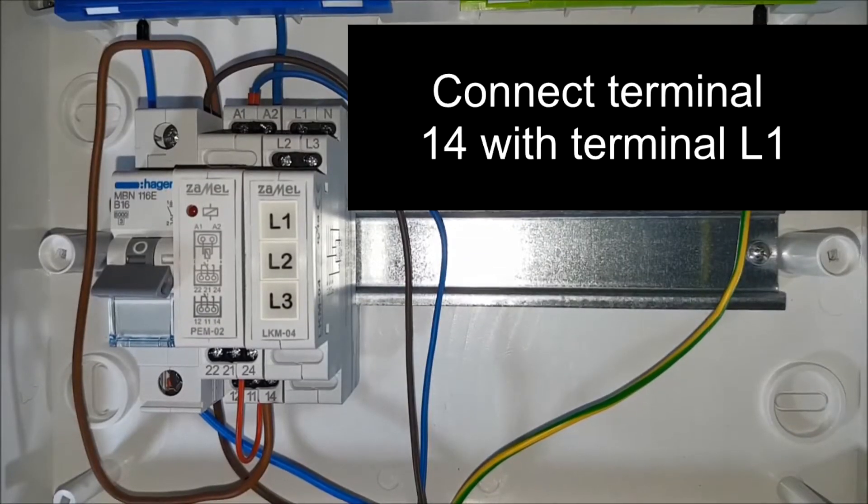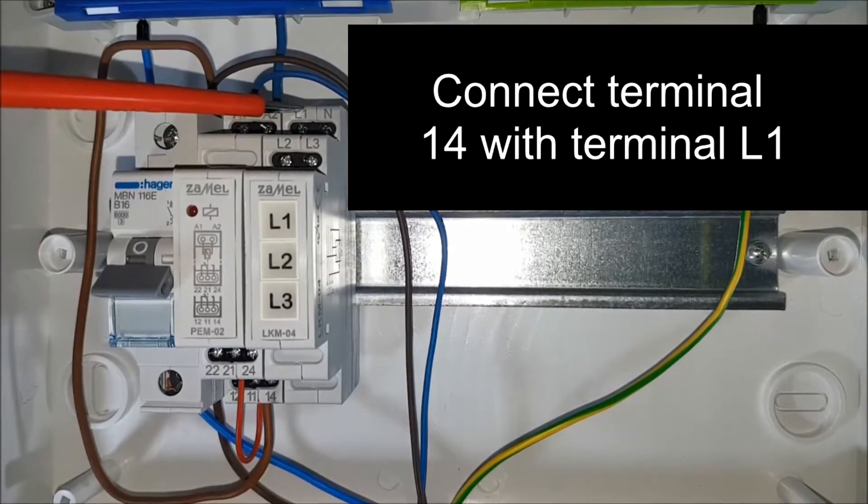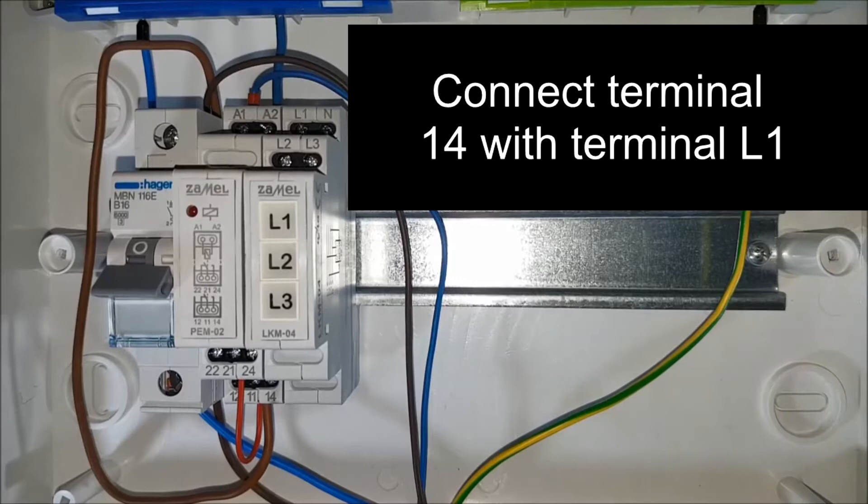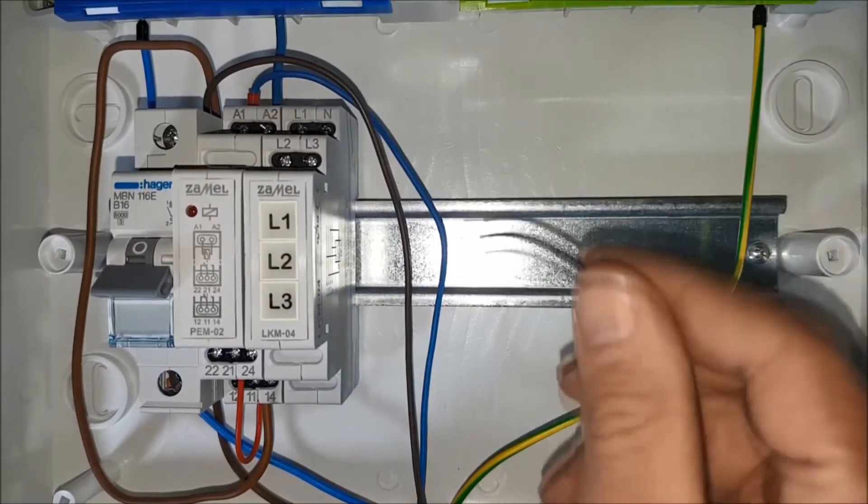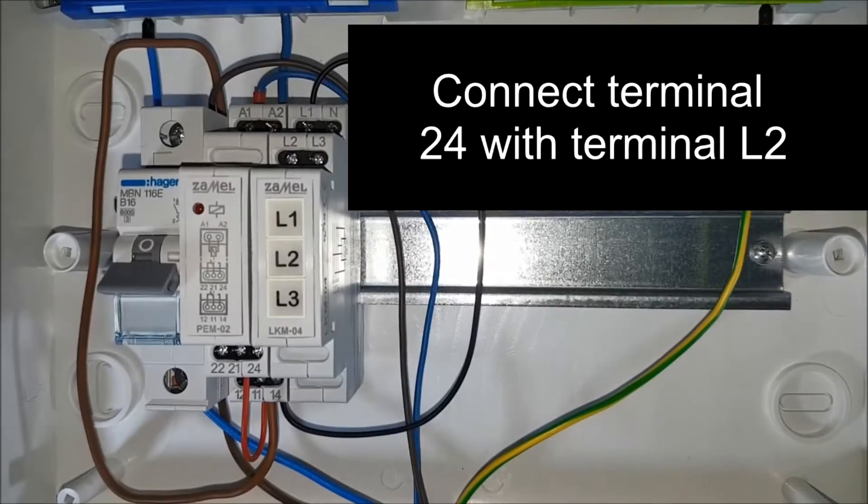First relay output goes to the first indicator LED. The output of the second relay goes to the second indicator LED.